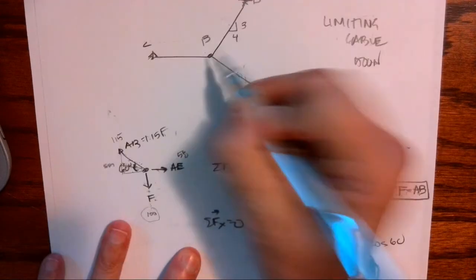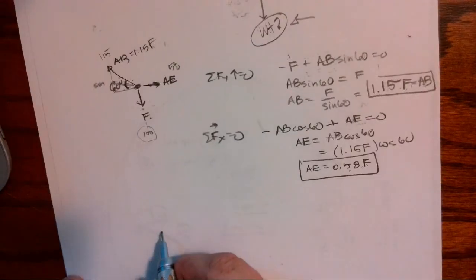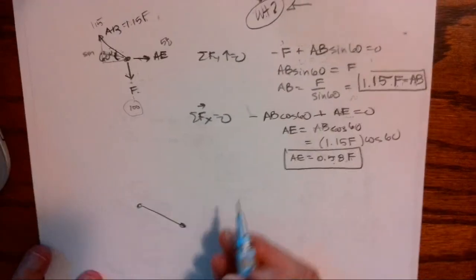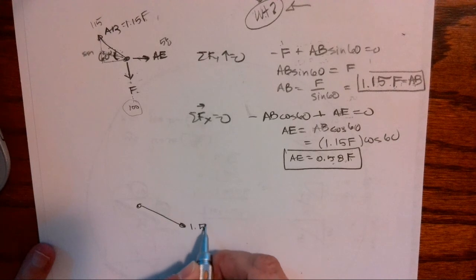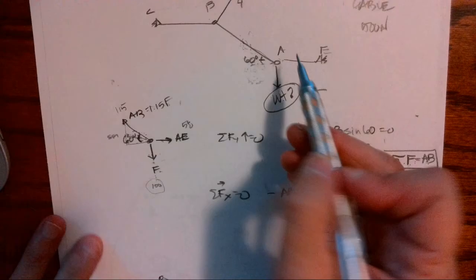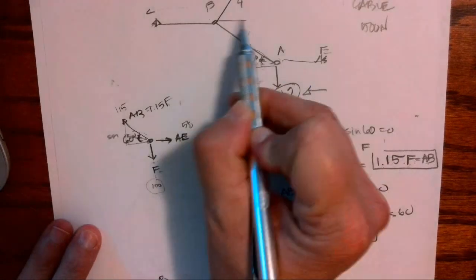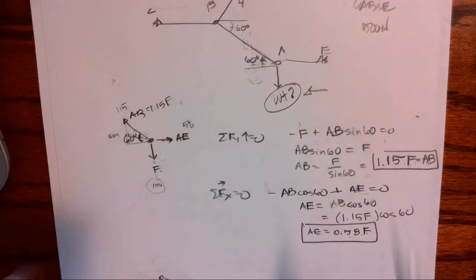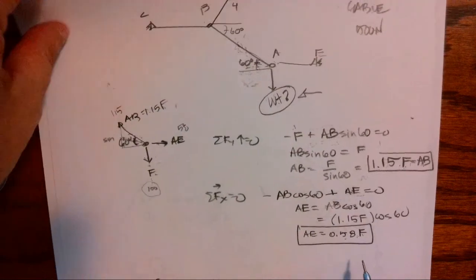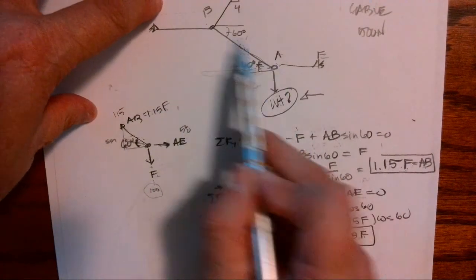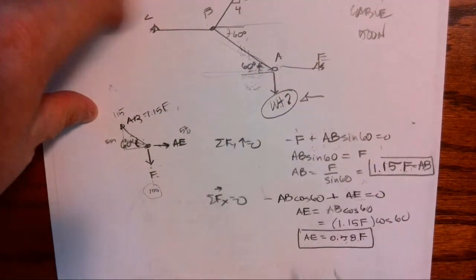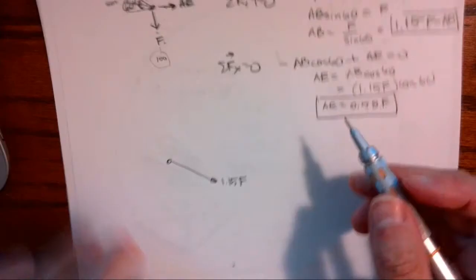Okay, so I have joint B and I know that this is 1.15 F, that's my AB, and I know that this is 1.15 F. If this is 60 degrees then this is also 60 degrees. This is probably like some geometry rule like parallel axis, I don't even know, but 60 and 60. So we can go ahead and put that on here.